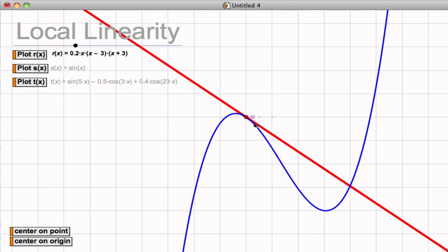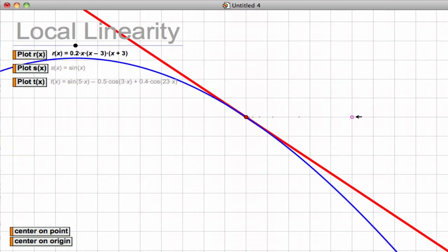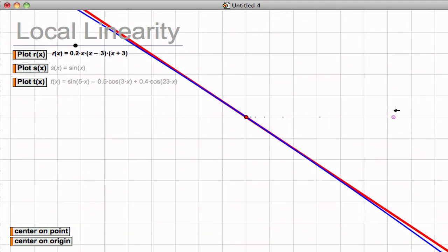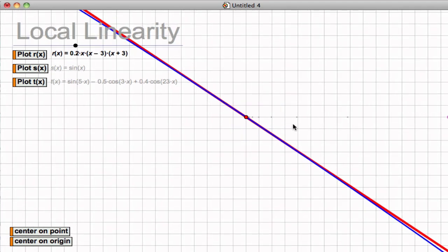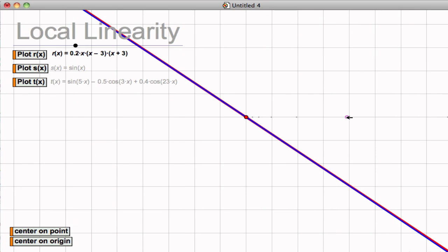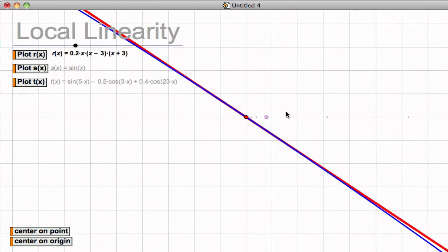we'll see that the curve, even though it's going up and down in a big picture, in the small picture, as we zoom in, we see that the curve really acts very linear. So again, that's local linearity.